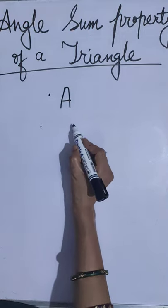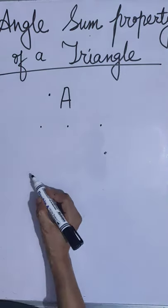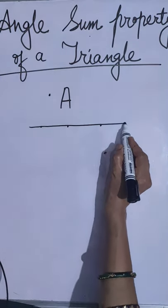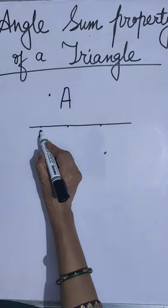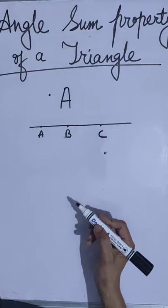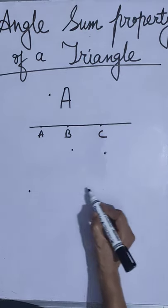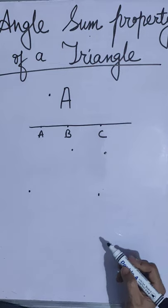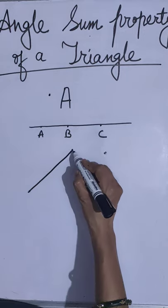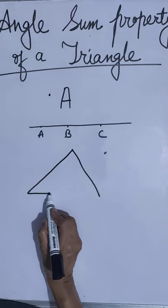Now see here — three points are there. All three points lie on the same line, so these three points are called collinear points. When the three points lie like this, are they collinear? No, they are non-collinear points.